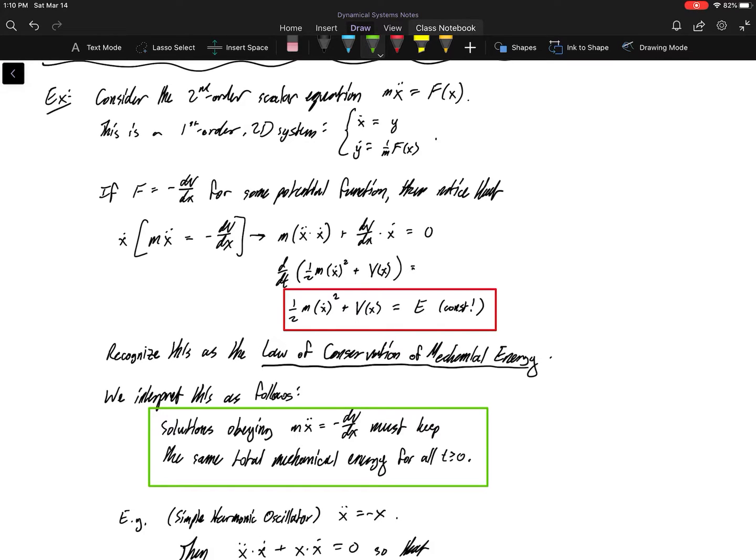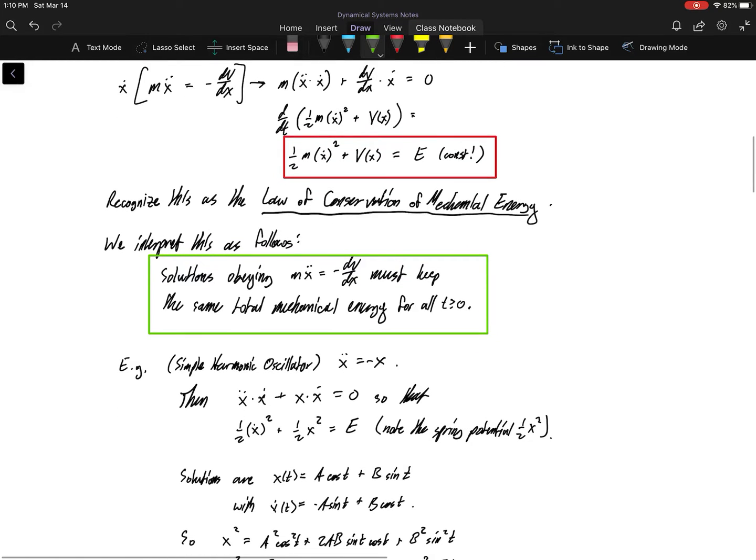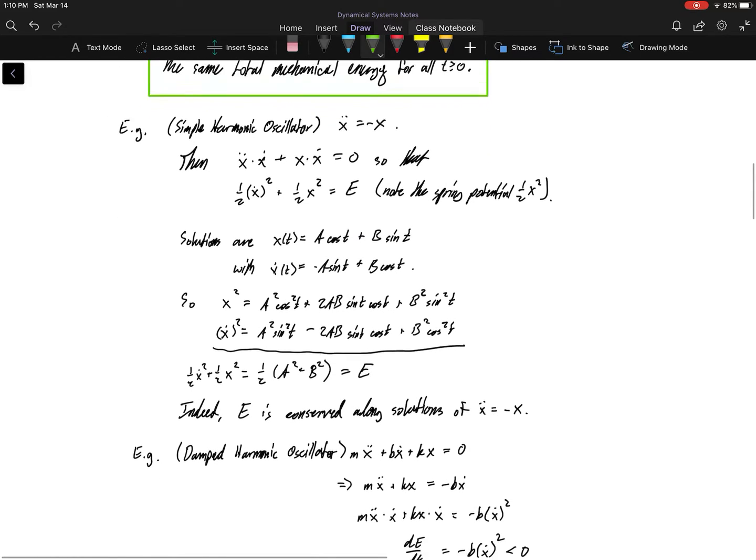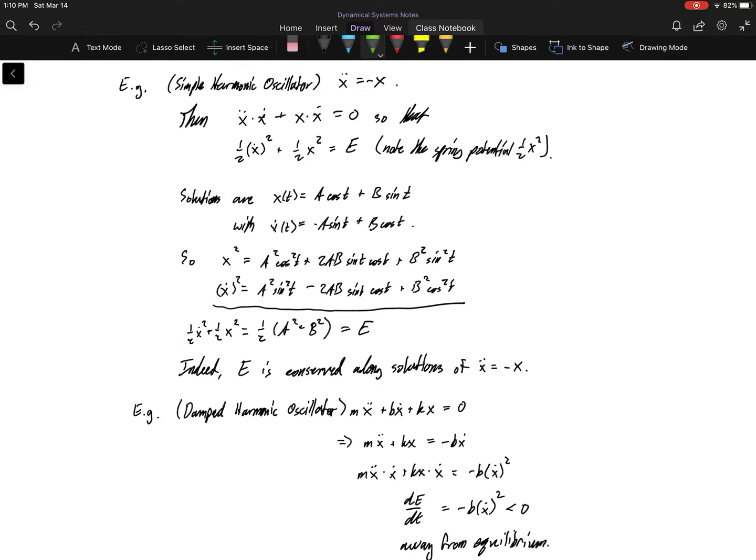And we showed that solutions to the simple harmonic oscillator, for a specific example here, solutions to the simple harmonic oscillator had to obey this conservation of energy. And we showed that. We went through an entire example saying that the total energy of the system has to be constant along solutions, and that worked out really well for us because we knew what the solutions to the simple harmonic oscillator were. Thank you, math 57.